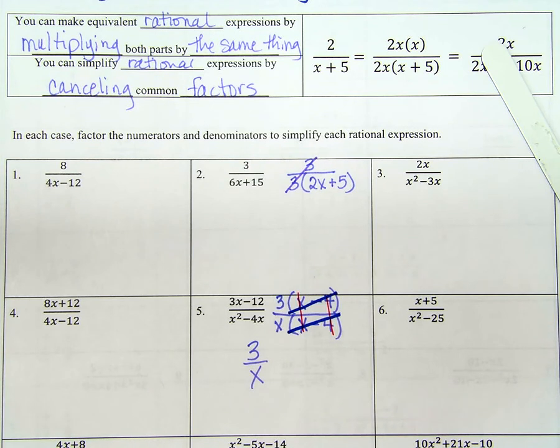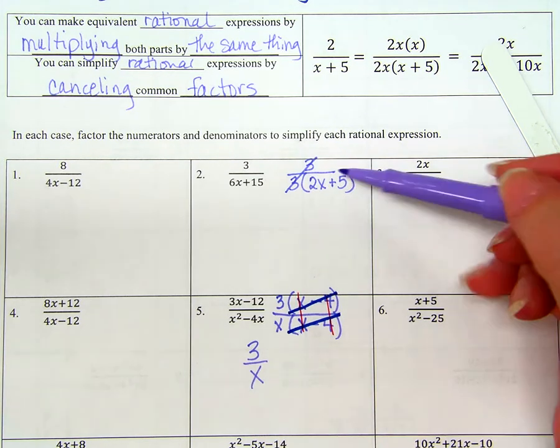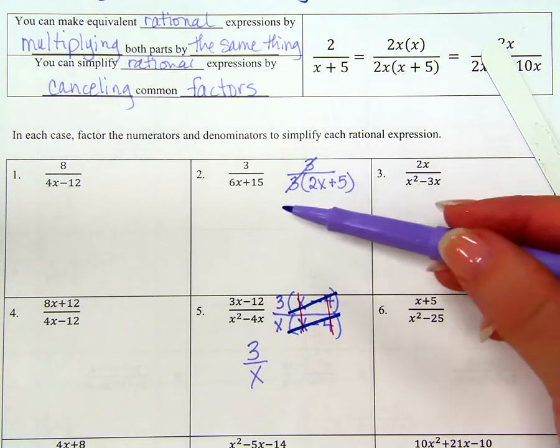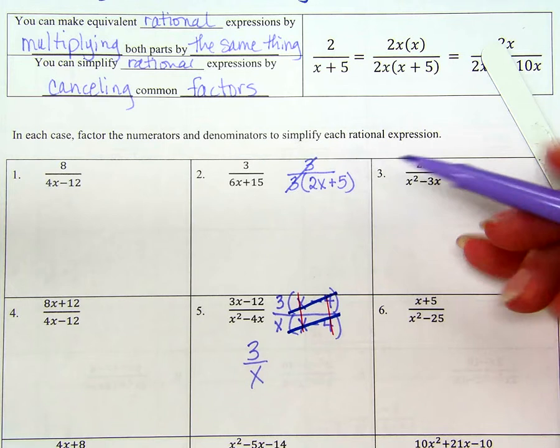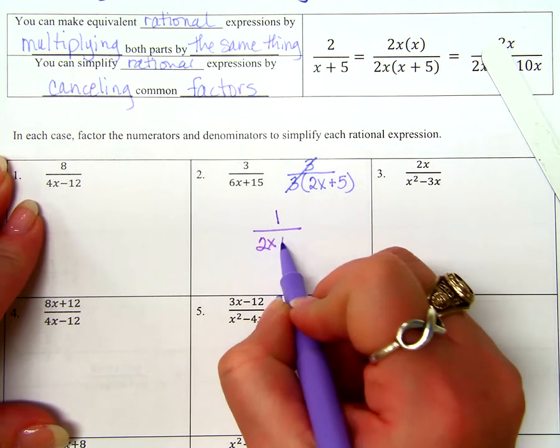Are both of these terms divisible by the same thing? What? 3. If I factor out a 3, what do I have left? 2X plus 5, right? Now, is there anything I can cancel with from numerator and denominator? Does numerator and denominator have the same factor? 3. Can I cancel out those 3's? Yes, because they are factors.